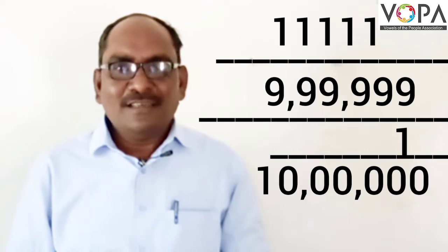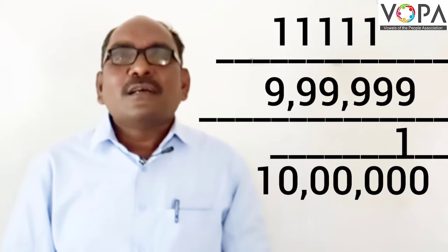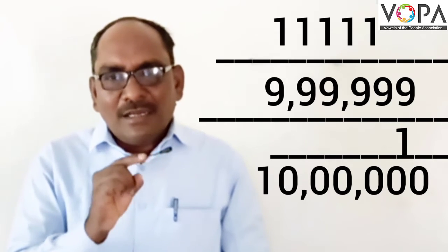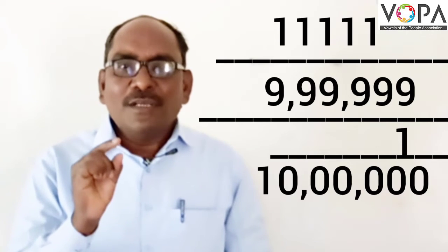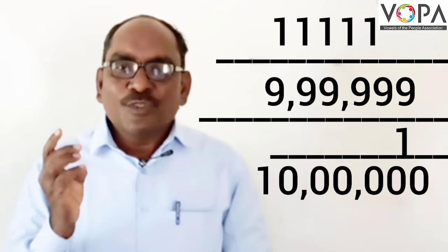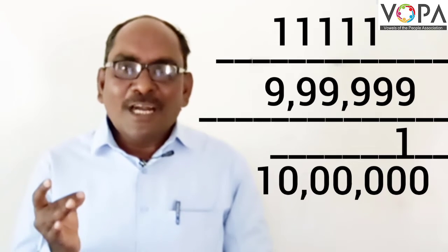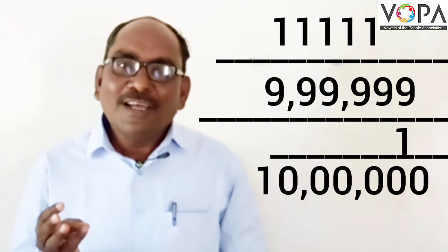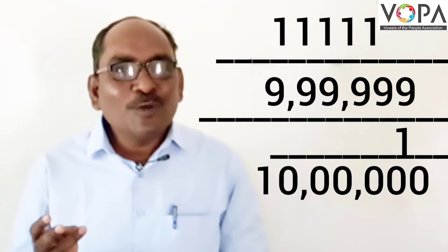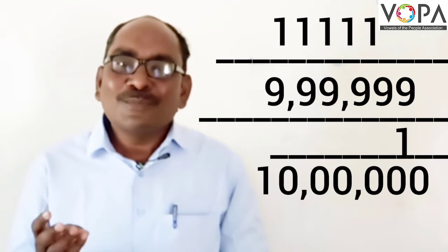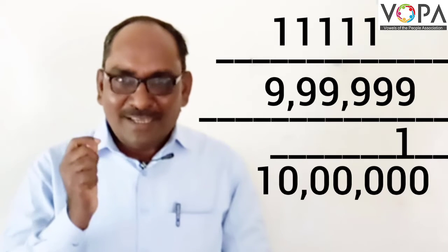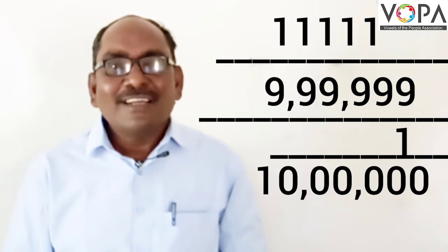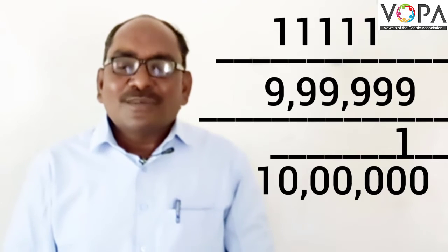We make the addition by adding only one to that number. By addition we get: the unit place is 0, tens place is 0, hundreds place is 0, thousands place is 0, ten-thousands place is 0, lakhs place is 0, and the ten-lakhs place is 1. That means the total is a 7-digit number.